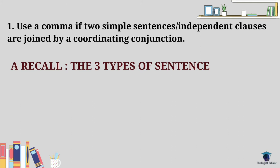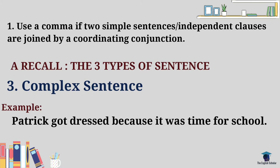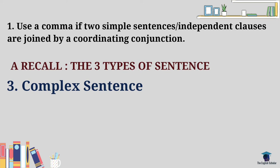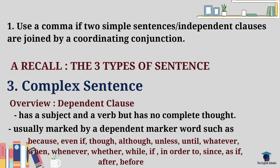Third in the list is the complex sentence. The complex sentence is a group of words that consists of one independent clause and one or more dependent clauses. For example: 'Patrick got dressed because it was time for school.' A dependent clause is a group of words that may have a subject and a verb but has no complete thought, and it is usually marked by a dependent marker word such as because, even if, so, although, unless, until, whatever, when, whenever, whether, or while.